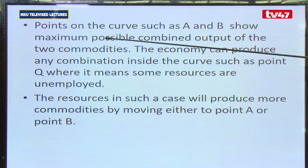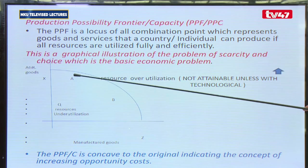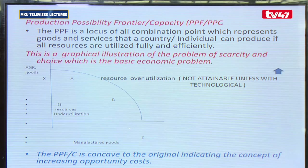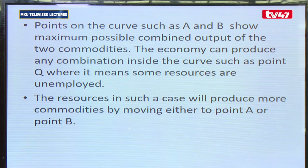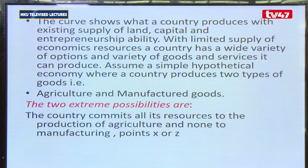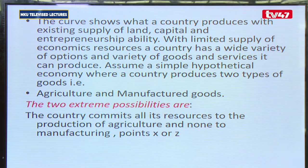Points on the curve such as A and B represent possible combined outputs of two commodities — agricultural products and manufactured products. Every country must always weigh where to put more resources. What guides them is the demand of its people, the level of development, or the policy that country has. A country must make a decision on two extremes: if they chose to put all resources on agriculture, they must forgo manufactured goods and vice versa.